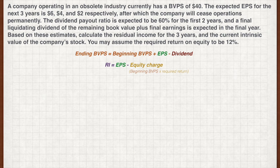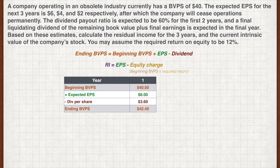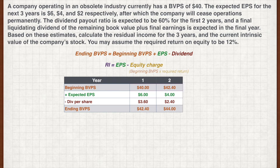Let's first calculate the BVPS based on the given estimates. In year one, the beginning book value is $40 and EPS of $6 is expected. Based on a 60% payout, the dividend is $3.60, so the ending BVPS is $42.40. This is also the beginning book value for year two. With an expected EPS of $4 and a dividend of $2.40, the ending BVPS is $44.